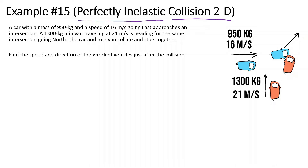We have a car with a mass of 950 kilograms with a speed of 16 meters per second going east, approaching an intersection. A 1300 kilogram minivan traveling at 21 meters per second is heading for the same intersection going north. The car and minivan collide and stick together. Find the speed and direction of the wrecked vehicle just after the collision.